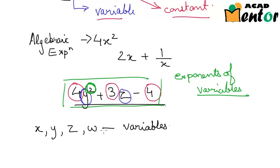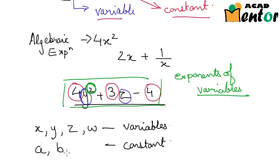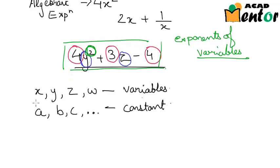I have used x, y, z, and sometimes w to represent variables. In some cases I may not know what the constants would be, so I use another alphabet to denote that constant term. Constants are denoted by alphabets like a, b, c and so on, while variables are usually denoted by x, y, z. Now that we know what algebraic expressions are, let's look at what polynomials are.